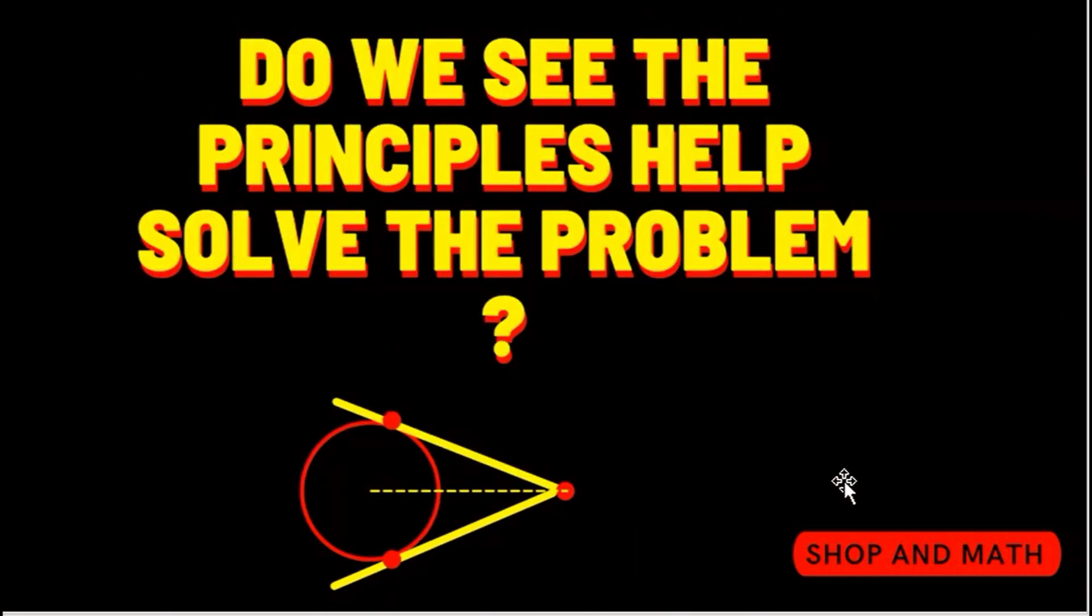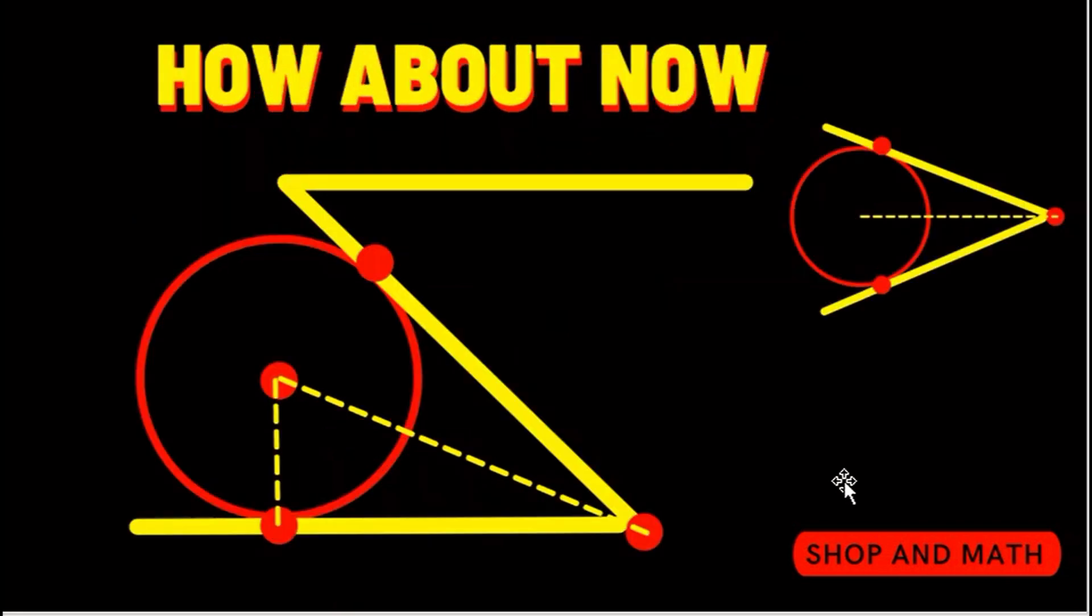Do we see how the principle will help solve the problem? How about now? So bisecting this angle here we can come up to the center of our circle here and we also have a 90 degree triangle here.